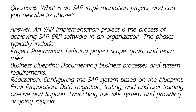Question 6: What is an SAP implementation project, and can you describe its phases? Answer: An SAP implementation project is the process of deploying SAP ERP software in an organization. The phases typically include: project preparation — defining project scope, goals, and team roles; business blueprint — documenting business processes and system requirements; realization — configuring the SAP system based on the blueprint; final preparation — data migration, testing, and end-user training; and go-live and support — launching the SAP system and providing ongoing support.